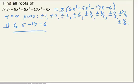The procedure says I drop the 6 down, multiply, add, multiply, add, multiply, add, and since this is not a zero, 1 is not a root.